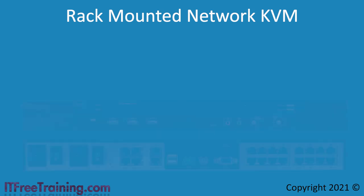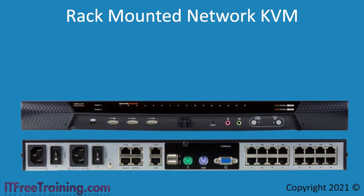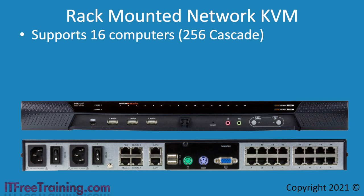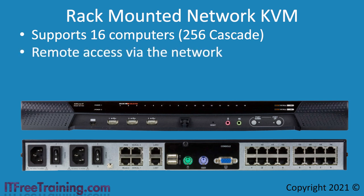The next KVM that I will look at is a rack-mounted KVM with network support. It is not uncommon to find rack-mounted KVMs in a server room. Rack-mounted simply means that the KVM can be attached to a rack that is also used to attach computers and other network equipment. This KVM supports 16 computers directly connected to it, or 256 cascaded. Cascade means the KVM plugs into other KVMs, which essentially allows one KVM to control and access the others. The KVM can be accessed by plugging a keyboard, video and mouse directly into it, but it can also be accessed using a network connection. This is incredibly useful as it means the administrator can access up to 256 different servers without leaving their desk.